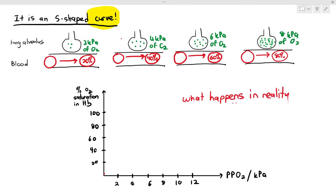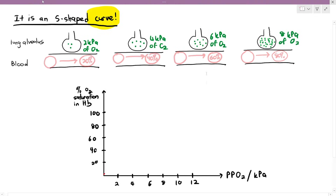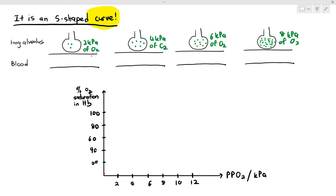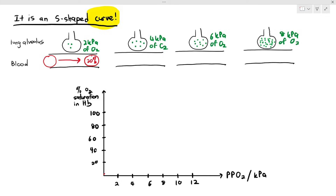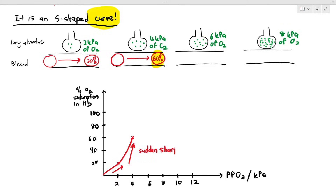In reality, something slightly different takes place. The partial pressure of oxygen still remains two, four, six, and eight kilopascals. Two kilopascals of oxygen will still give 20% — that's fine. But four kilopascals of oxygen, instead of giving 40% oxygen saturation, actually gives 60%. There is a sudden, sharp increase in the percentage oxygen saturation of the red blood cell.